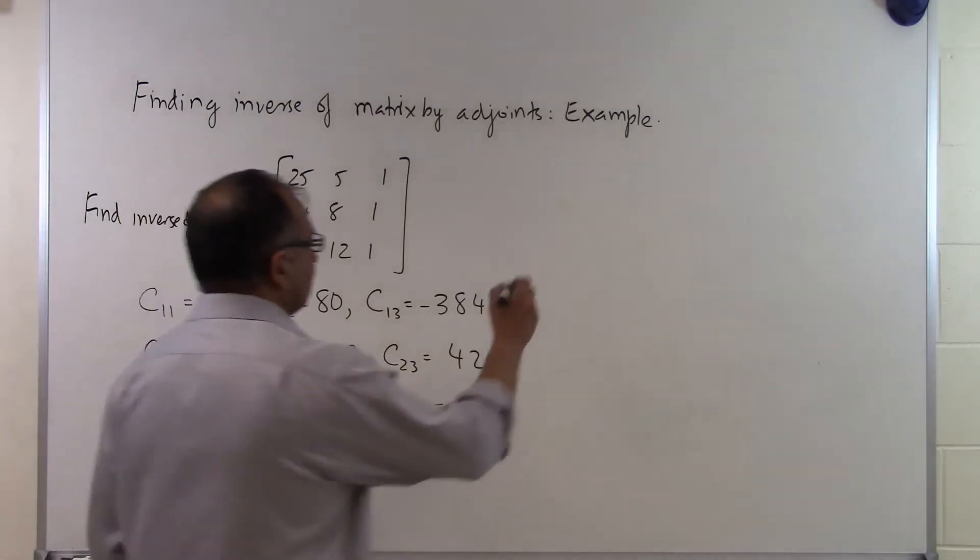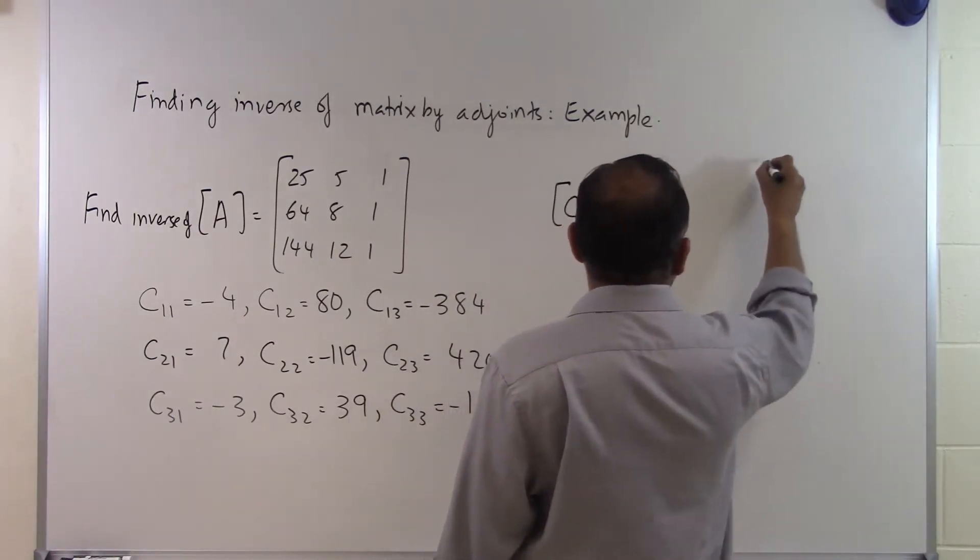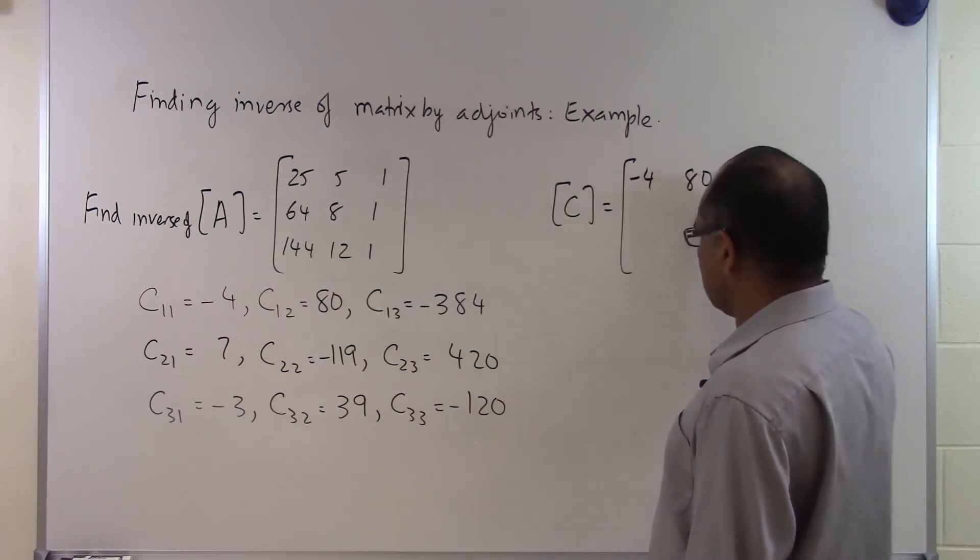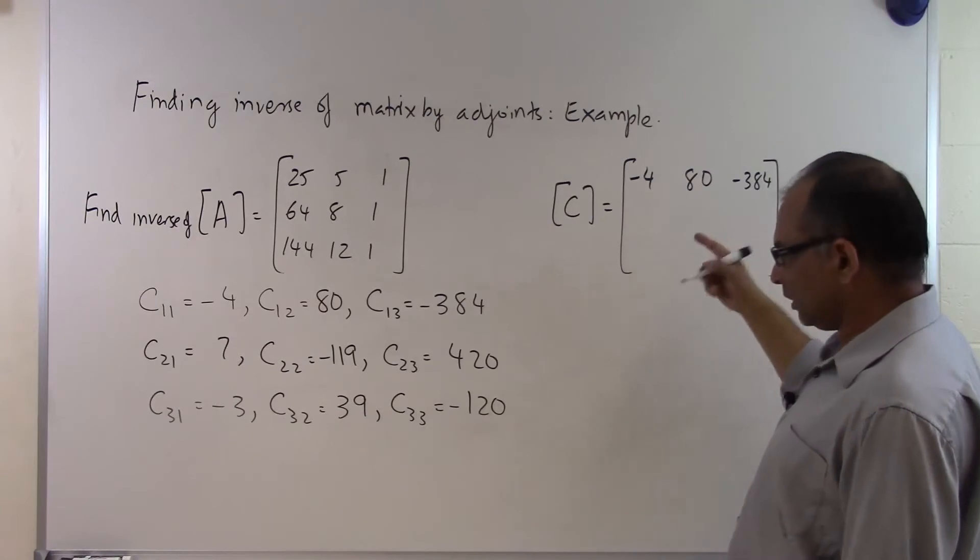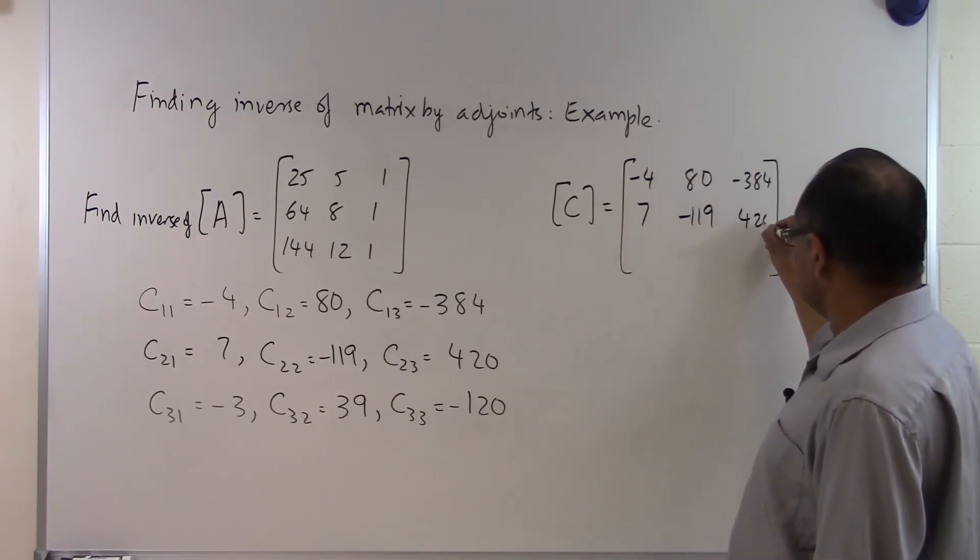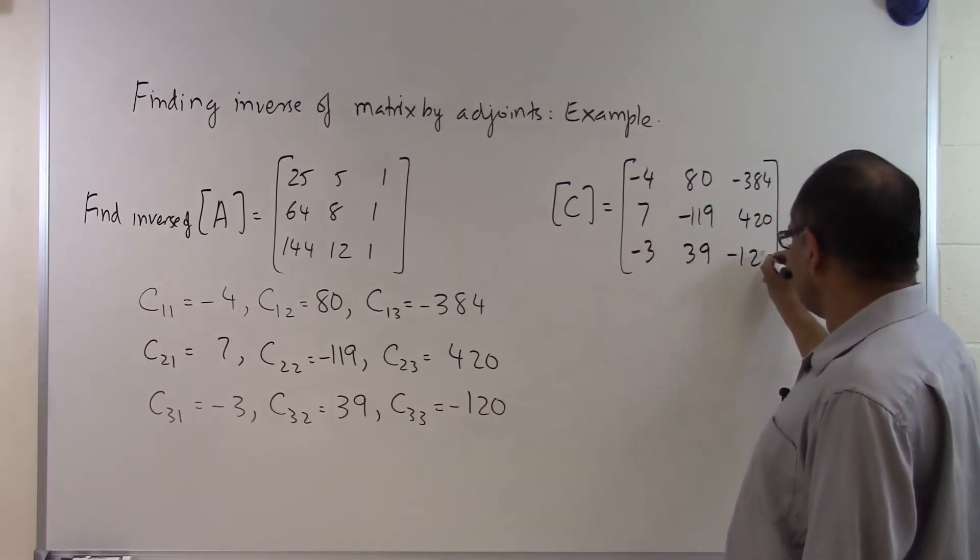Now I can write my C matrix, which is my cofactor matrix. I'll just write in the matrix form. I get minus 4, 80, minus 384. It's simply putting these elements in the proper place. 7, minus 119, 420, minus 3, 39, minus 120.